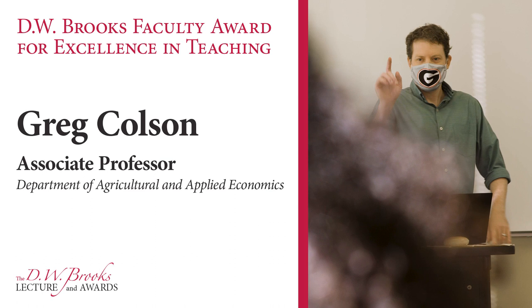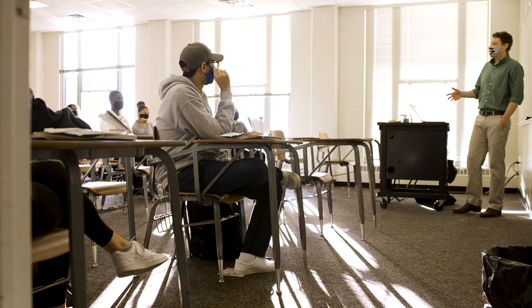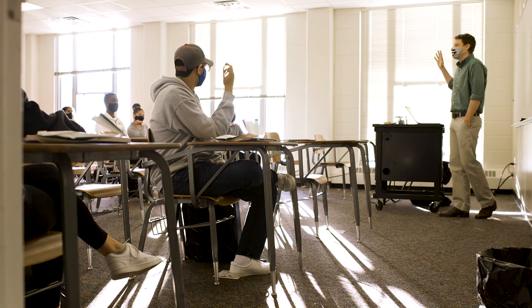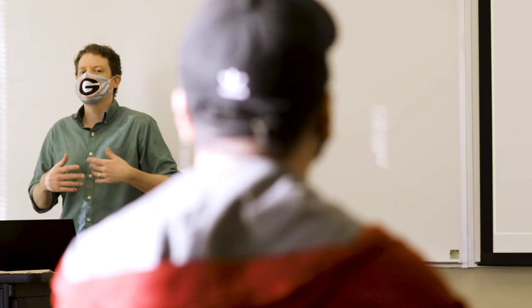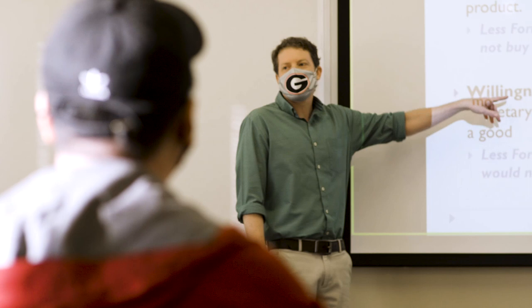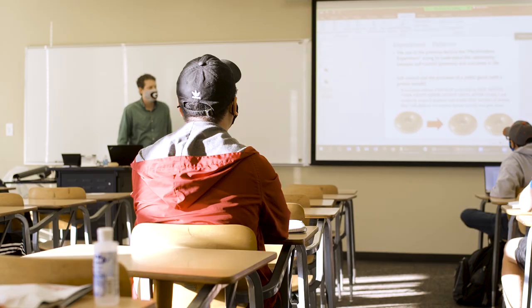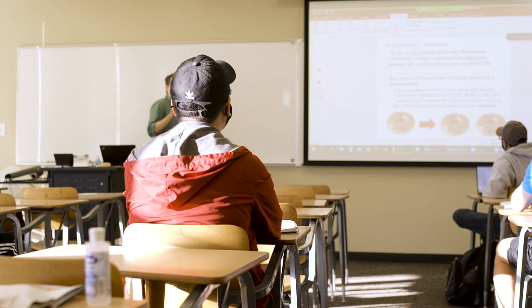Greg Coulson is an associate professor in the University of Georgia's Department of Agricultural and Applied Economics, which typically uses economic experiments or surveys to explore consumer and producer decision-making as it relates to agriculture, energy, and the environment. Coulson teaches microeconomic theory at the undergraduate and graduate levels.